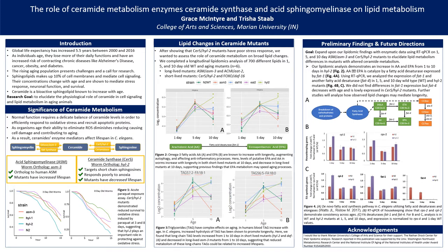Figure 2a is looking at arachidonic acid, which is converted to icosopentanoic acid shown in 2b by a fatty acid desaturase gene, FAT1. You'll see in both A and B that there's an increase in the concentration of these lipids from 1 to 5 day in all mutants, but what's interesting is that for Hyl-2, shown here in green, there is a continued increase in the concentration of AA and EPA from 5 to 10 days, while for ASM3, our long-lived mutant, there is a decrease in the concentration of both of these lipids from 5 to 10 days. This indicates that EPA metabolism may speed the aging process, which supports previous studies.